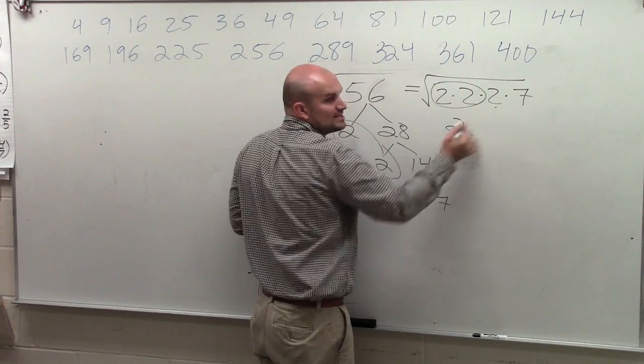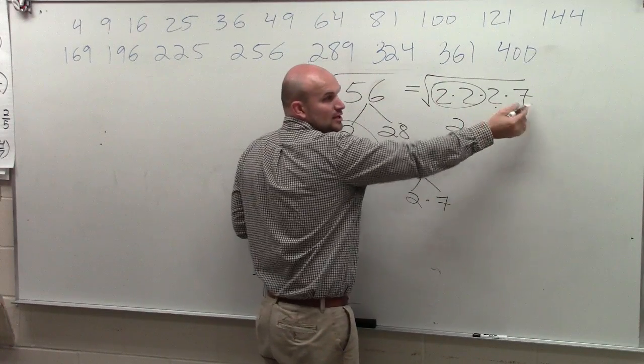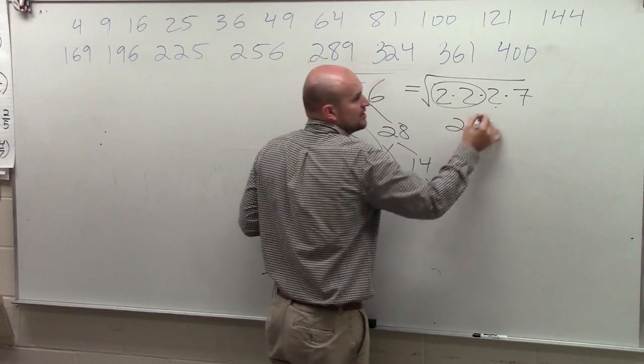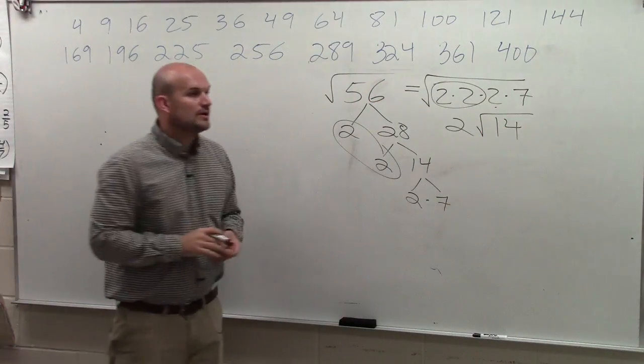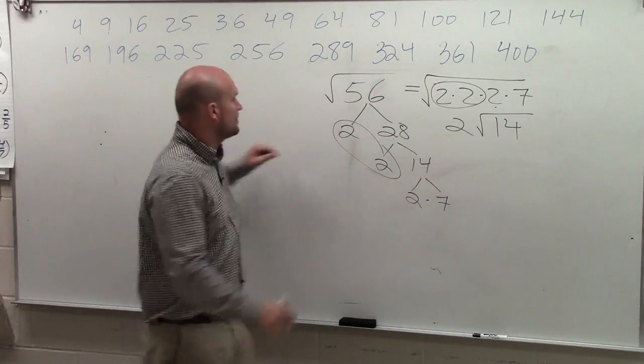However, I still have 2 and 7 that I cannot take the square root of because they don't have a pair. So therefore... I'm sorry, where? Why do you get 2×4?